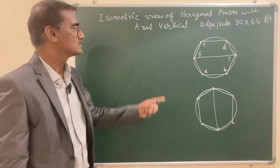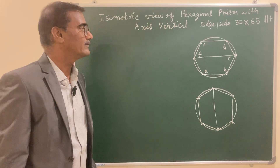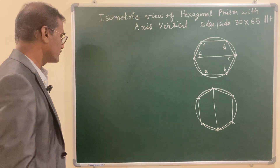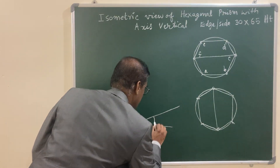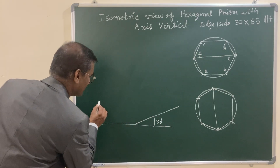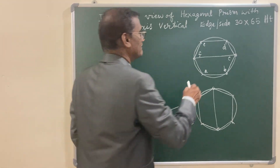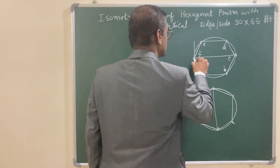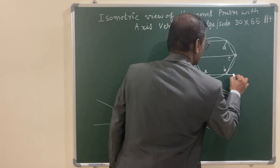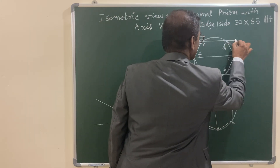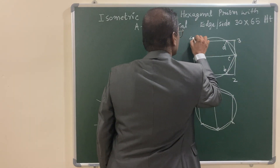We are considering the edge horizontal, so we proceed to draw the isometric view of the hexagonal prism. Draw a horizontal line; to the right it is 30 degrees and to the left it is 30 degrees. Since non-isometric lines are involved, inscribe the hexagon in a rectangle — in isometric, this becomes a parallelogram. Number the corners one, two, three, and four.